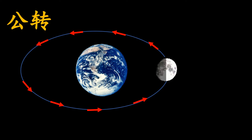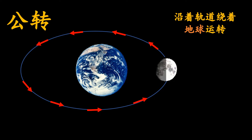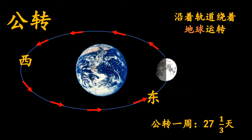月球的公转是月球沿着轨道绕着地球运转。月球公转的时候也是由西转到东，逆时针的方向运转。月球公转一周需要花费的时间是27又三分之一天。(The Moon's revolution is the Moon orbiting Earth along its orbital path, also from west to east, counterclockwise, taking 27⅓ days.)